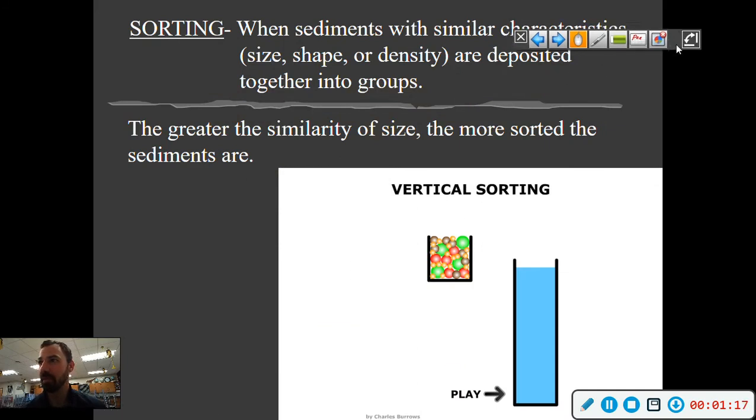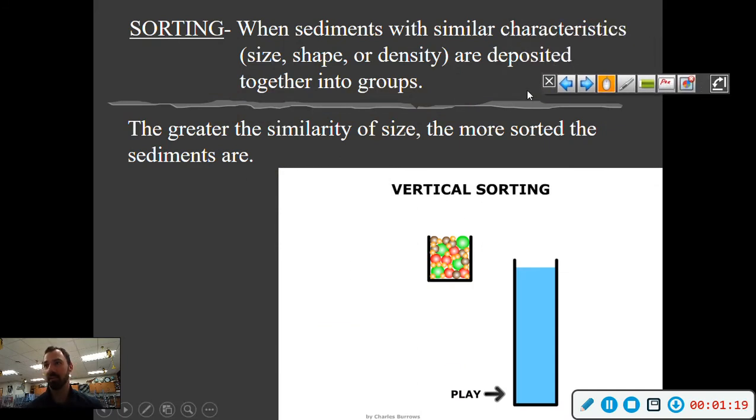Sediments of similar characteristics—size, shape, or density—are deposited into groups when you have sorting happen. The greater the similarity in size, the more sorted the sediments are considered to be. Here's a real-life version of this: vertical sorting. This is called a sediment tube. Shake it up.